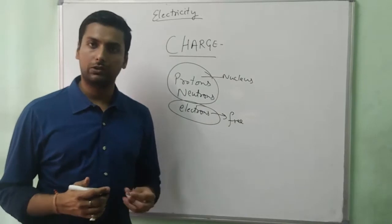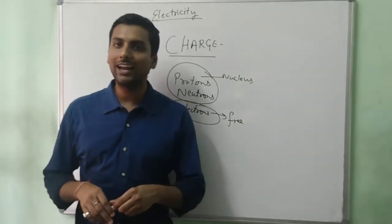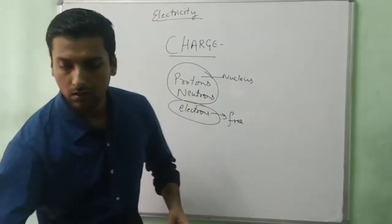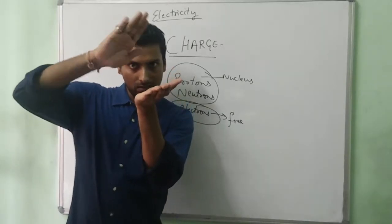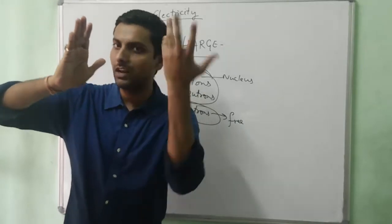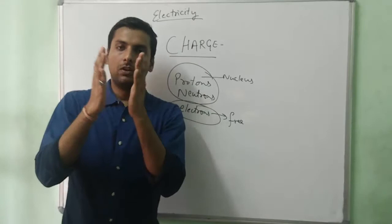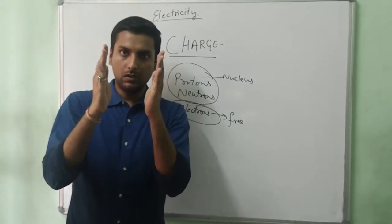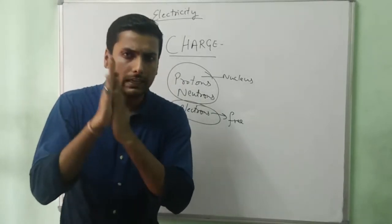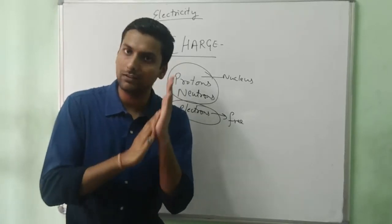What do you mean by the term charge? Whenever there is an interaction between two atoms or two bodies — suppose when I am rubbing my two hands, this is one body and this is another body. They may consist of different types of atoms. When these two come in contact and I rub them, I will experience heat between them due to what we call friction, which we have understood in a previous class.